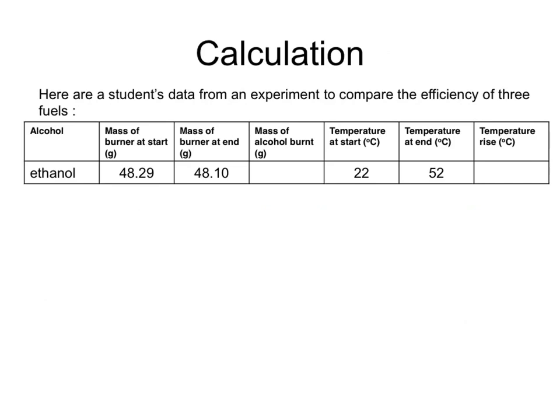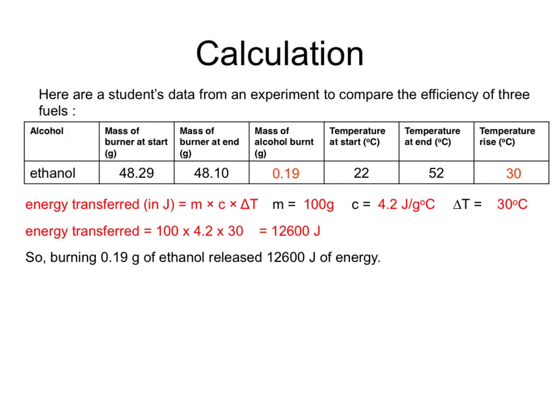Here's a student's data from an experiment to compare the efficiency of three fuels using ethanol. To work out the missing data, you'd use energy transferred equals mass times specific heat capacity times temperature change. The mass of the water would be 100 grams if 100 cubic centimetres of water were used. The specific heat capacity is 4.2 joules per gram per degree C. The temperature change would be 52 take away 22, which is 30 degrees. So the energy transferred is 100 × 4.2 × 30, which is 12,600 joules.